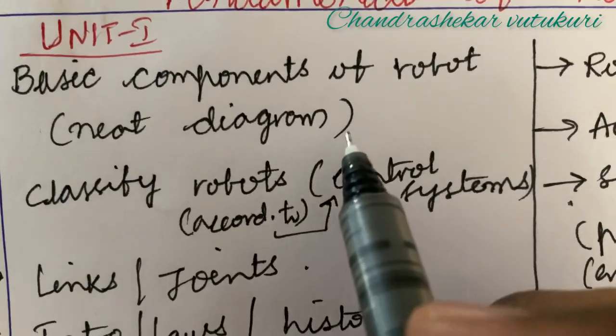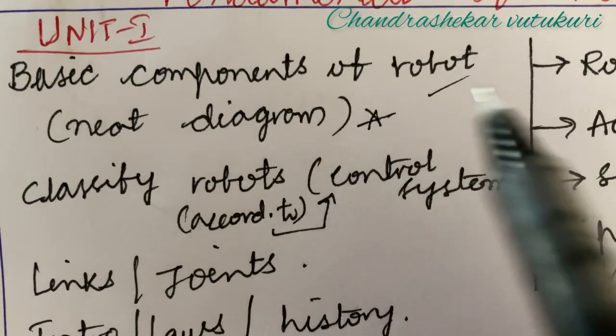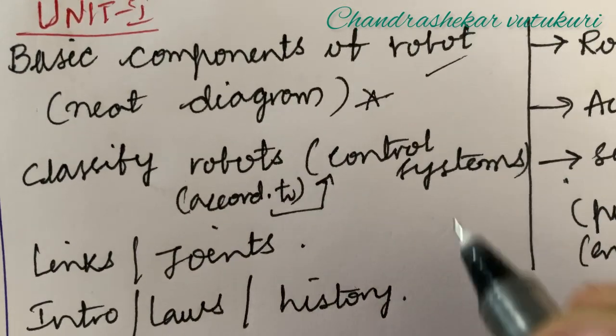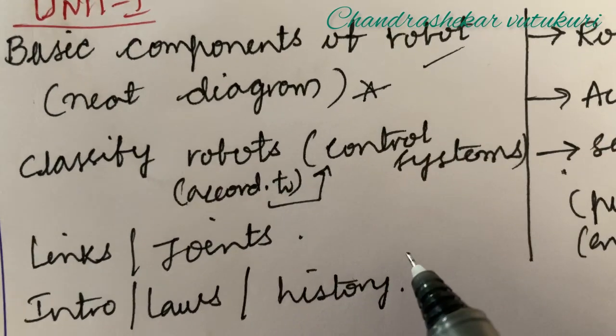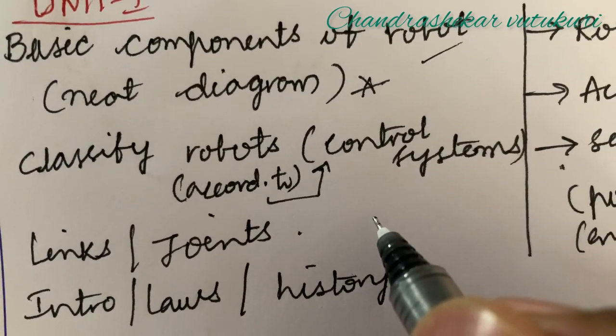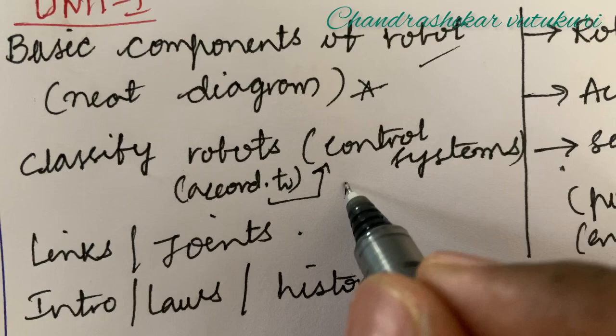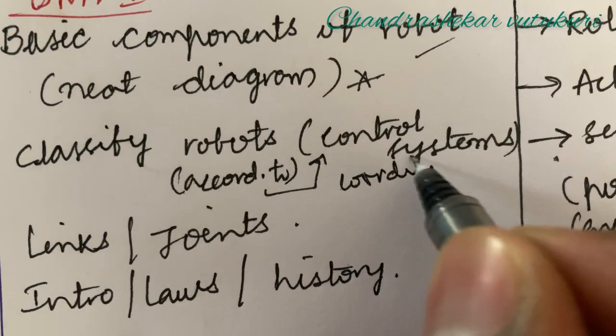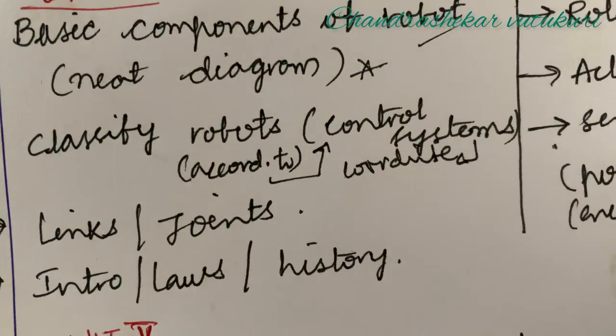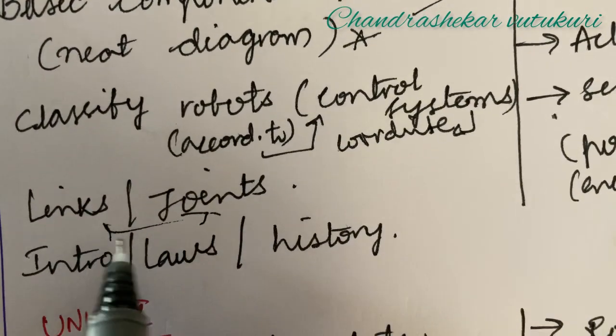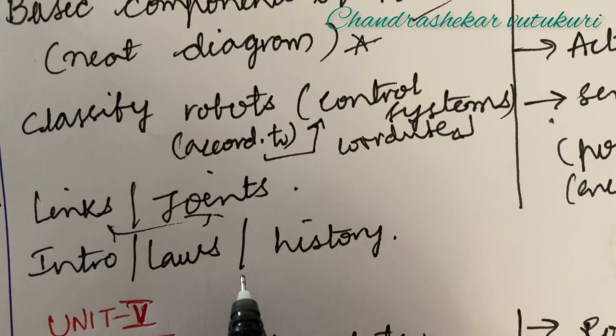The first unit is all about the basic history of robotics, the basic components of robot along with the neat sketch you are supposed to work out and classify robots. You are supposed to work out as per this pattern how I have kept on the paper, classify different types of robots according to the control systems as well as the coordinate systems also.